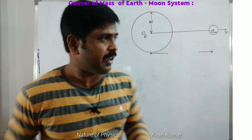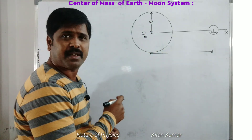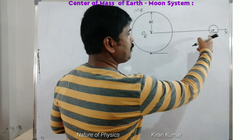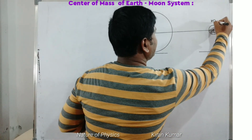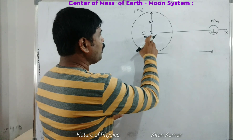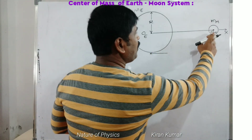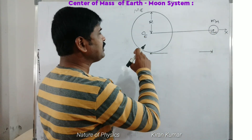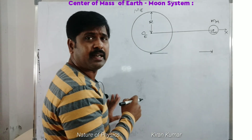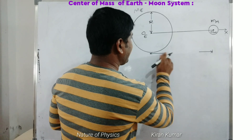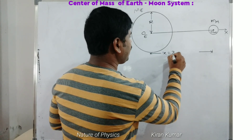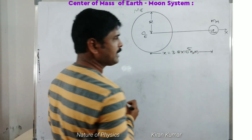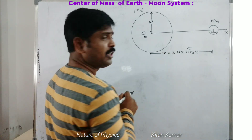This is the Earth. r is the radius of the Earth, and Me is the mass of the Earth. This is the Moon, and the mass of the Moon is Mm. Oe is the center of the Earth, Om is the center of the Moon. I am taking the line joining from the center of Earth to the center of the Moon as the x-axis. This distance is x, which is equal to 3.8 × 10⁵ kilometers.